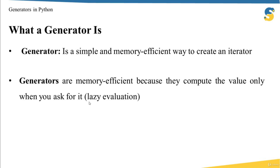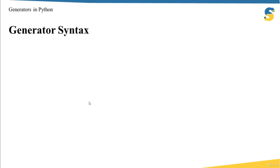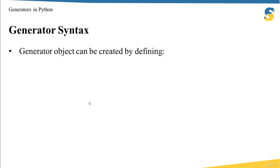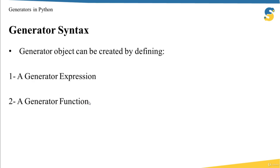So you are able to process a very large file using a very small amount of memory — and this is possible because we are using generators. To create a generator, there are two ways: the first is using a generator expression, and the second is using generator functions.